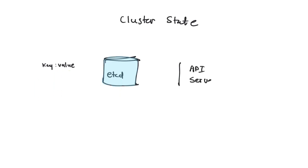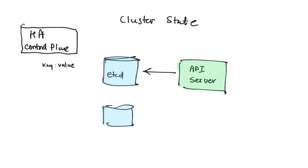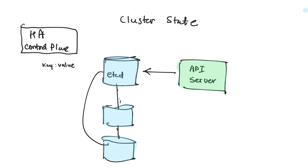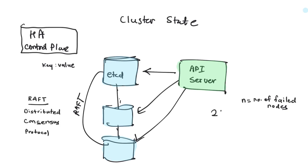etcd is a key-value pair database — also pronounced as 'etcd'. The entire state of the cluster, any configuration changes you make, and any objects you create are first stored in etcd. When you talk to the API server, it makes an entry in etcd first. When setting up your control plane with high availability, you first set up a cluster of etcd with a minimum of three nodes. These etcd nodes talk to each other using a protocol called Raft, which is a distributed consensus protocol ensuring configuration stored in any etcd node is propagated to all nodes.